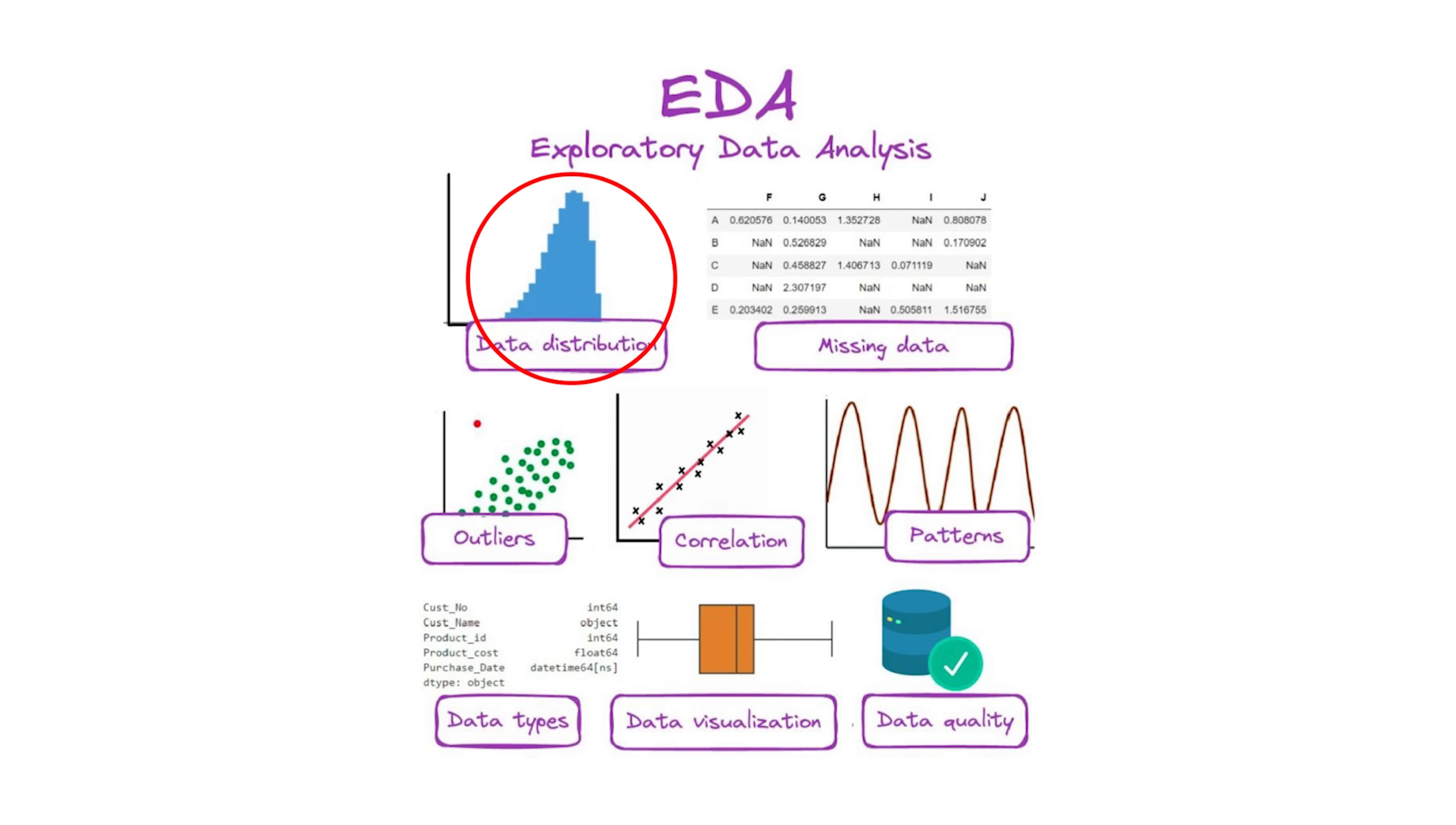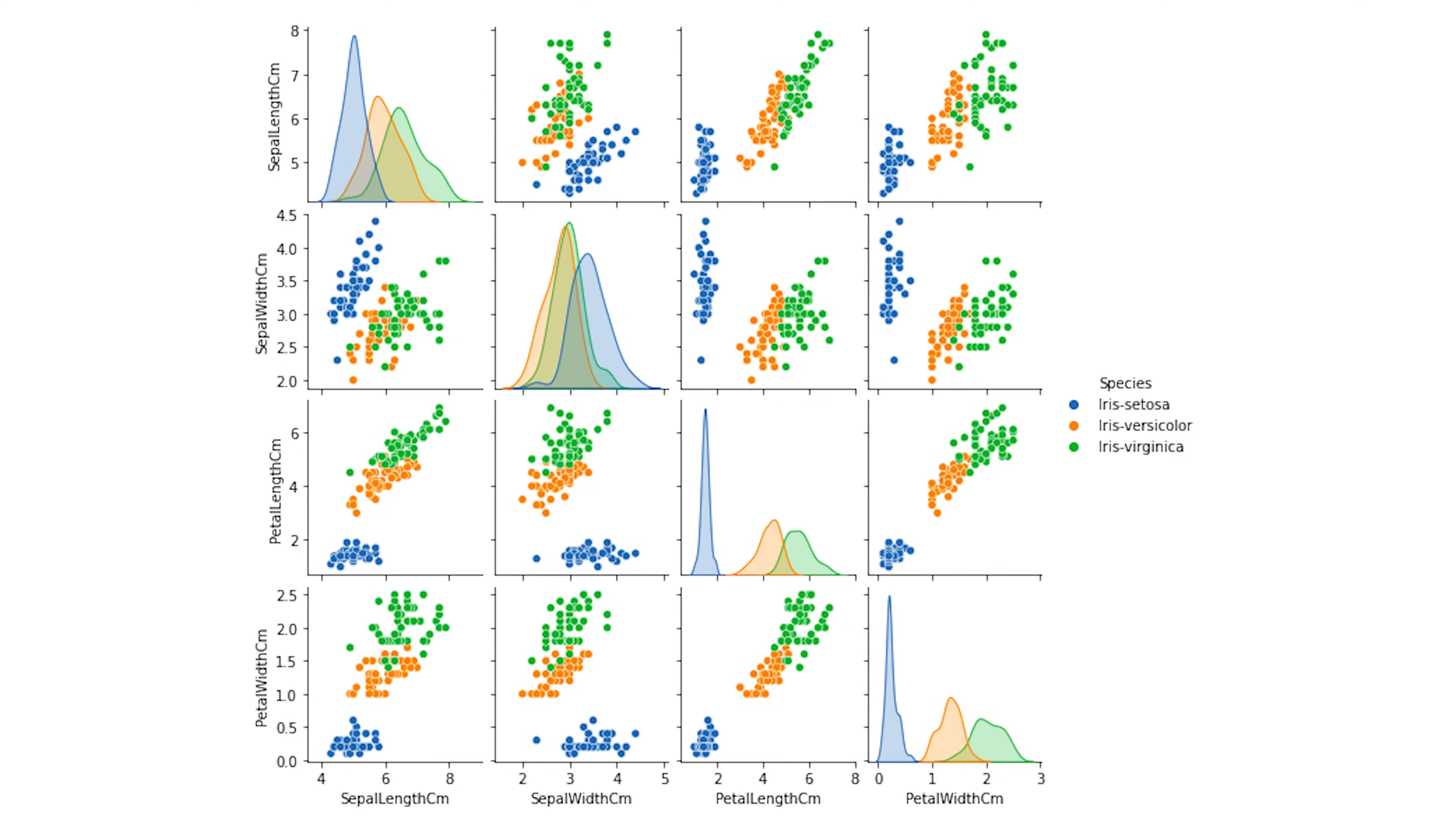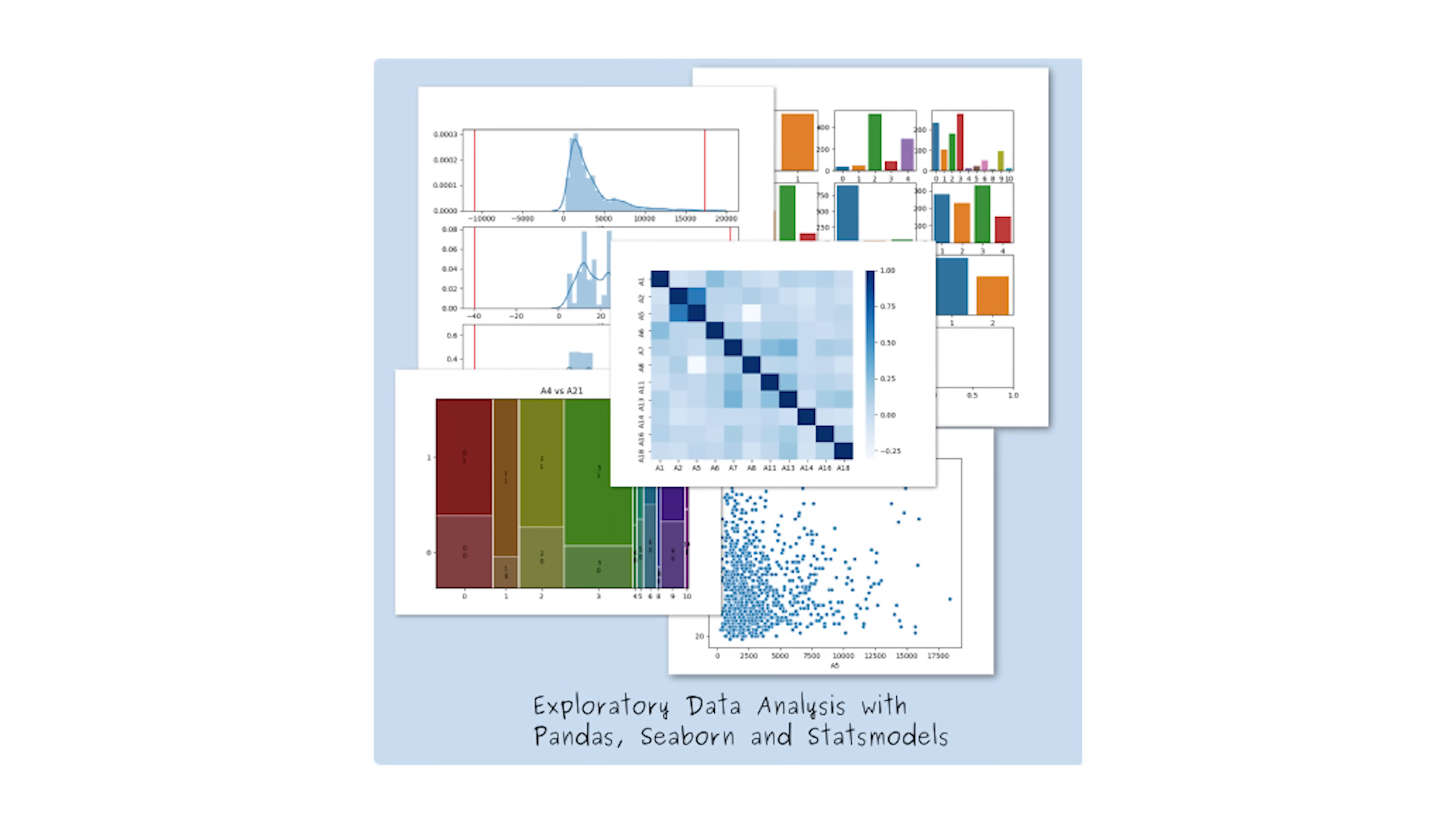Visualizing the distributions of individual features helps to understand how your data is structured, whether it's skewed, normally distributed, or contains outliers. Many machine learning algorithms make assumptions about the data, for example, normality, independence. EDA helps validate these assumptions and determine if adjustments are needed. EDA will also help with model interpretability. By visually exploring the data and understanding its structure, you gain insights into how different features contribute to the outcome, making it easier to interpret and explain model results.